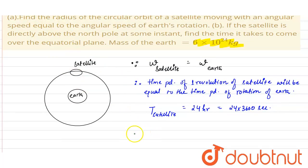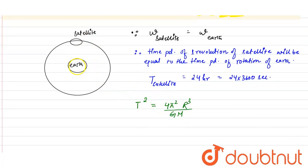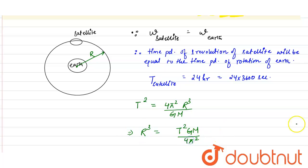The expression for the time period is given as T² = 4π²r³ / (G·M), where r is the radius of the orbit of the satellite. From here, we get the value of r³ = T²·G·M / (4π²).